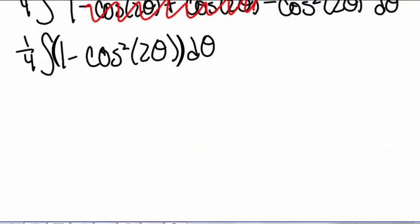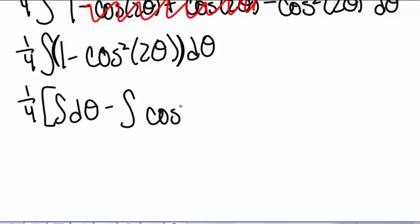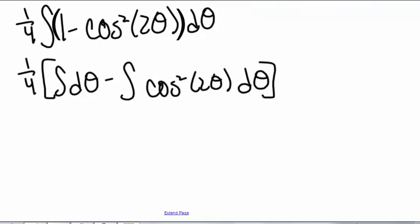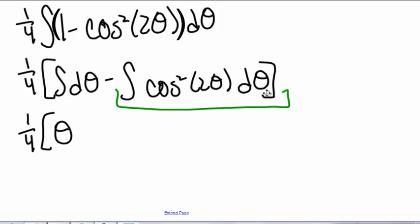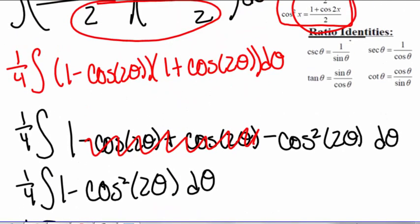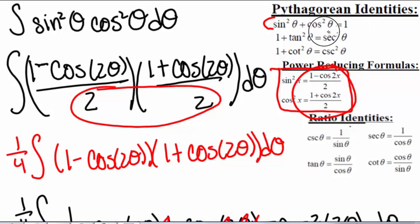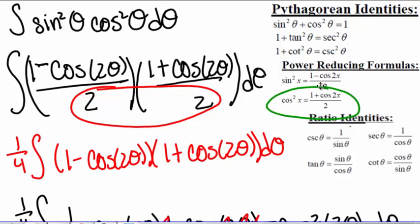We can split apart these integrals to get one-fourth times the integral of dθ minus the integral of cosine squared of 2θ. We know that the integral of dθ is theta, so what we need to find is the integral of cosine squared of 2θ. We could try different substitutions and find that none of them will work, so we need to look back at our identities and formulas. We have cosine squared of x equals (1 plus cosine of 2x) divided by 2.